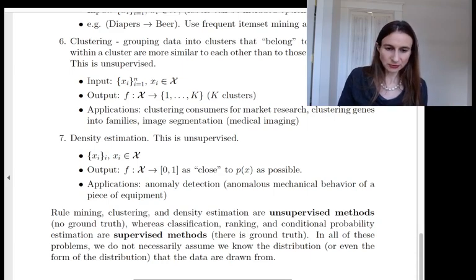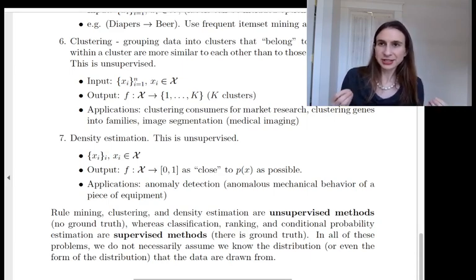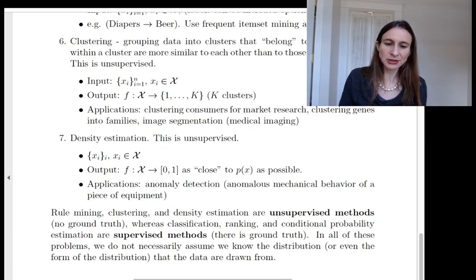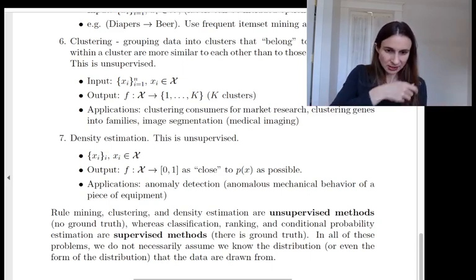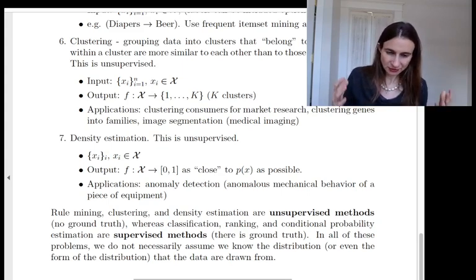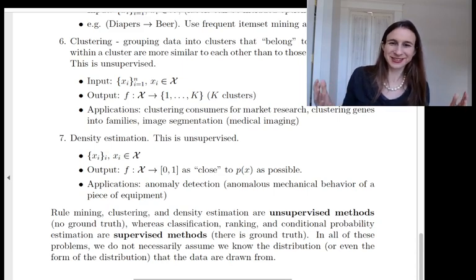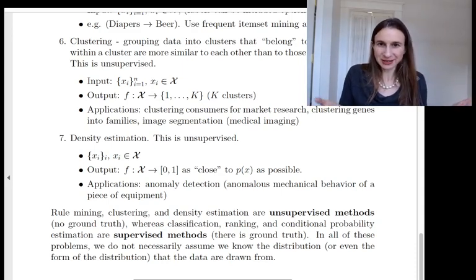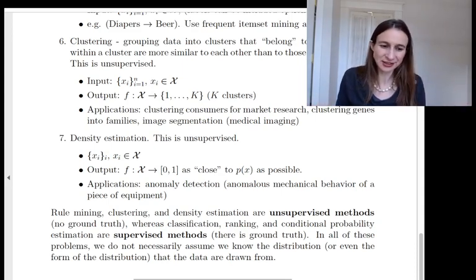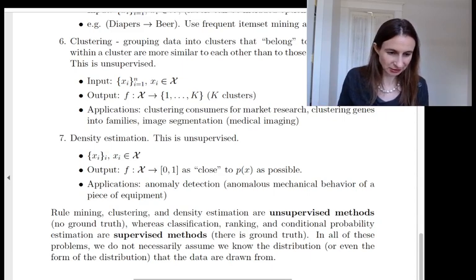And some applications of density estimation are things like anomaly detection. For instance, if you find that your machine is in a state where it has a very low density, that means maybe an anomalous state that doesn't happen very often. You might want to think about, okay, is there something wrong? Is this something happening? Also, if you're doing credit card fraud and you notice these anomalous transactions that just don't seem to have things in common with the way normal transactions are conducted, then you might flag that and go and take a look at it.